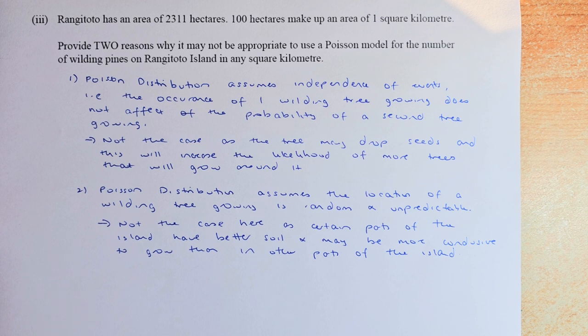The first reason is Poisson distribution assumes the independence of events. That is, the occurrence of one wilding tree growing does not affect the probability of a second tree growing. In this case, it is not the case that the tree may drop seeds and this will increase the likelihood of more trees that will grow around it. So that is the first point. The Poisson distribution assumes independent, but in this case it is not an independent event.